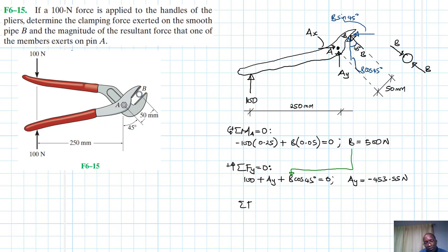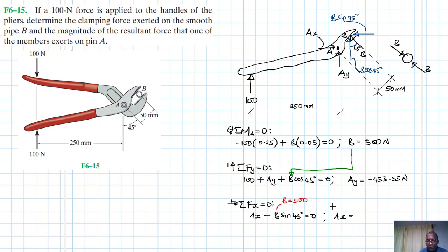Summation of forces in the x-direction equals zero: Ax minus B sine 45 equals zero. B is 500, so Ax equals 500 sine 45, which gives Ax = 353.55 Newtons.